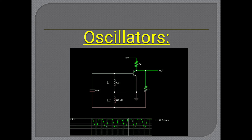As long as the DC power source is connected, the frequency of oscillation depends on the passive components used in the oscillator circuit, and those passive components can be changed as per our will. Oscillators are commercially used in stereo amplifiers, radio and television transmitters, receivers, radars, etc.